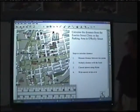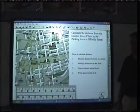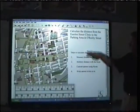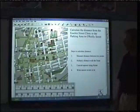The first part of the lesson is where the boys will have to calculate the distance from Essendon Street Clinic to the parking area in O'Reilly Street. We've put the ruler there for them because they need to use that and we've given them all the steps they need to follow to complete this task.